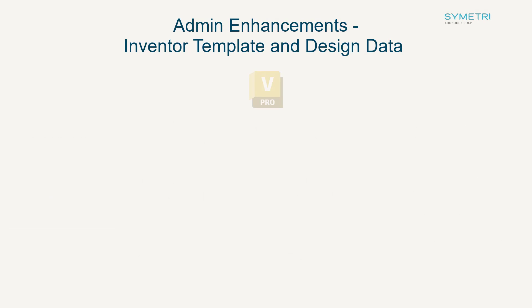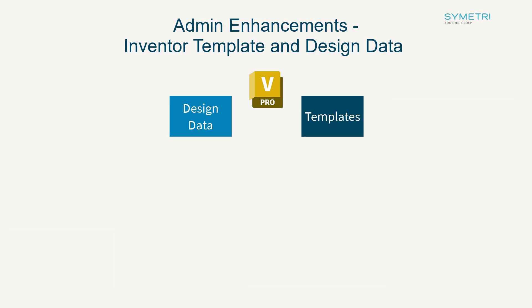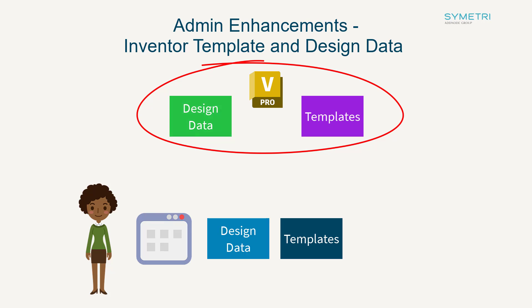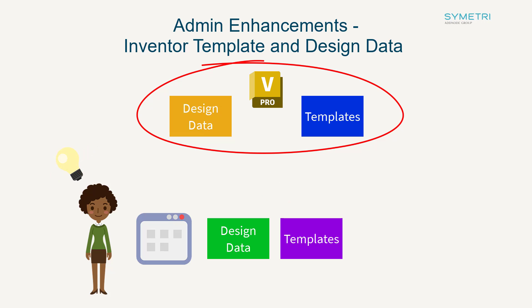In previous releases, storing design data and templates in vault allowed users to have a central location for the data. However, if any data was updated — say a change was made to the global template — the user would have to perform a GET on the file to ensure they had the latest version. This allowed users to fall out of date with templates and design data if regular changes were occurring. Within the new release you now have the option to map the design data and templates in the Inventor vault add-in, and it will download any changes every time you log into vault, ensuring the latest version of the file is always on your machine.